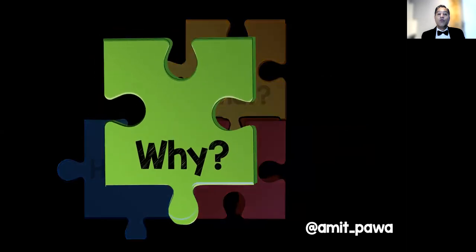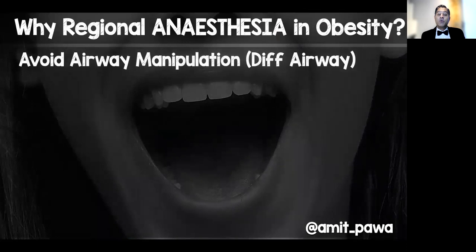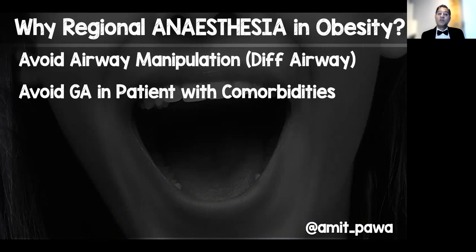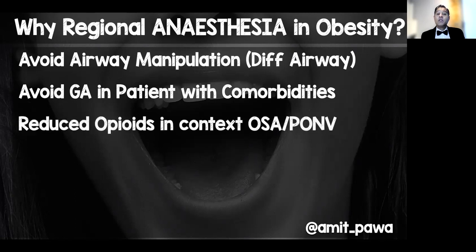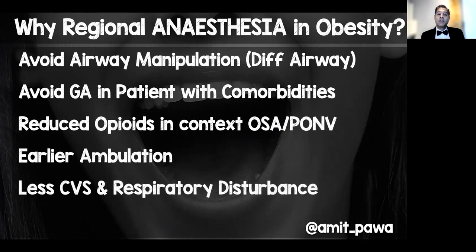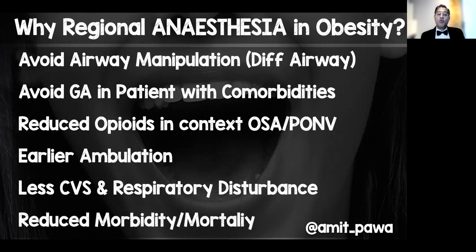Regional anaesthesia may be beneficial in patients with obesity because they may have difficult airways — performing regional anaesthesia allows you to avoid or minimise airway manipulation and avoid a general anaesthetic. These patients often have associated comorbidities including hypertension, ischaemic heart disease, and diabetes. Regional anaesthesia allows you to use less opioids, which is a great benefit in patients with obstructive sleep apnoea, reduces post-operative nausea and vomiting, gets patients mobile faster, and there is evidence of a reduction in morbidity and mortality.